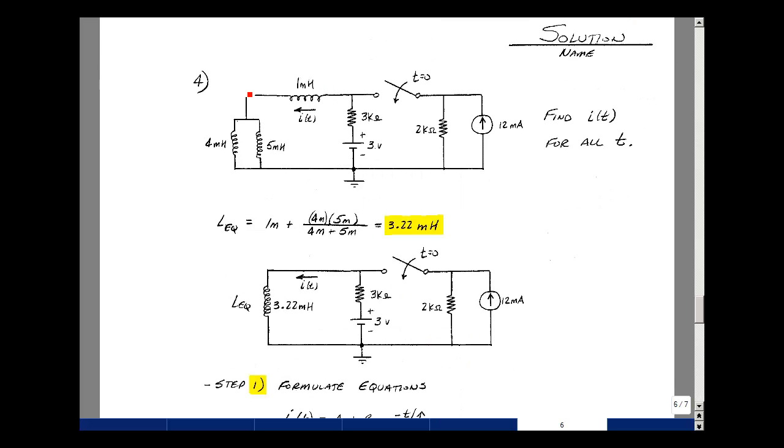Problem number 4 is a multi-inductor circuit with a single pole single throw switch. Could you find the current in this 1 mH inductor for all time? Even though I've got multiple inductors here, I could represent this by a single inductor whose value would be 1 mH in series with the parallel combination of the 4 mH and the 5. So product over sum, then add it to 1 mH, and that turns out to be 3.22 mH. I have the same current flowing in that series combination, so I can still solve for my current in a one-inductor problem.